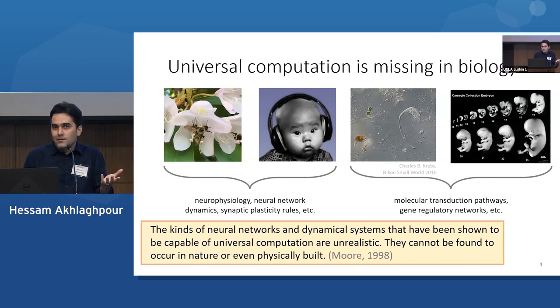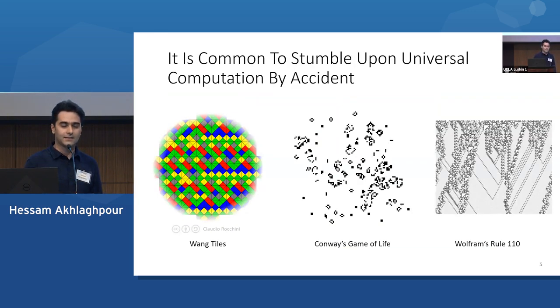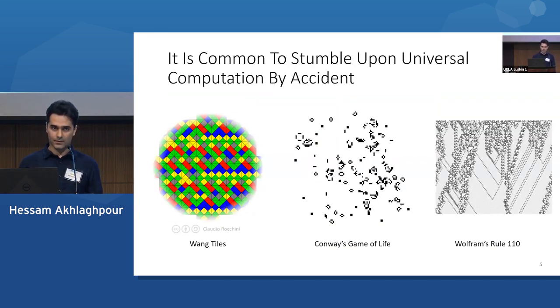Why don't we have a universal computation system in biology? Now, maybe you might say that's all right, biology is fine without a universal computation system. It gets by with the current models of computation that we already know. But I find this proposition difficult to accept, especially given that it's easy to accidentally stumble upon universal computation.